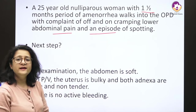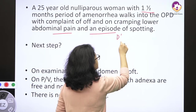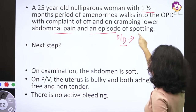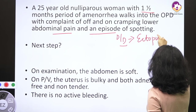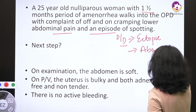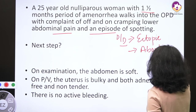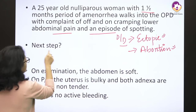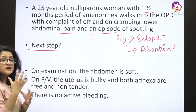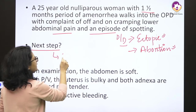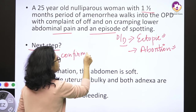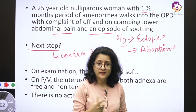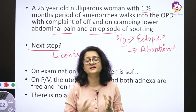Remembering from the previous lecture, the differential diagnoses coming to mind are ectopic pregnancy and abortion. I will move ahead with clinical examination, and before that, my next step is to confirm the period of gestation. Always make it a habit to ask the LMP and calculate the period of gestation in weeks — it makes it much easier to compare the gestational age with the size of the uterus.